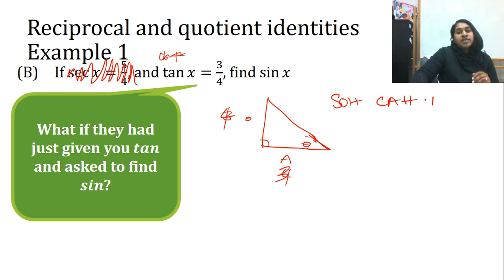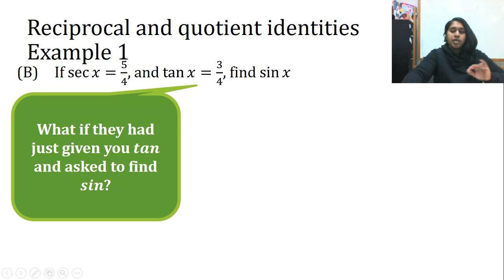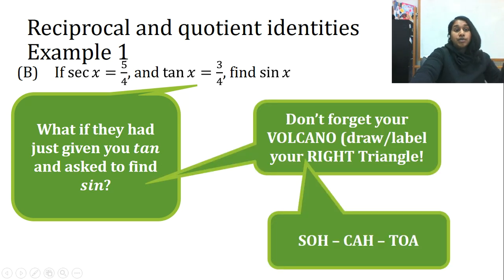Because if I know SOHCAHTOA, then I also know that cosecant is hypotenuse over opposite. Secant would be hypotenuse over adjacent. Cotangent would be adjacent over opposite. So just know that information, recall that information, and know that this can also be used with labeling and drawing your right triangle and solving from there.